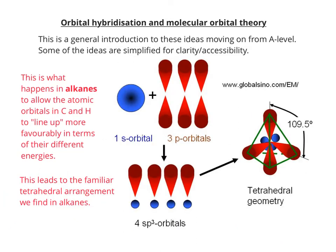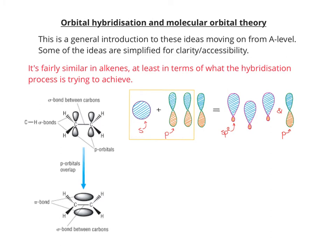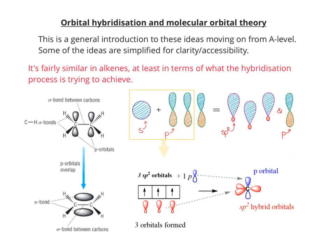SP3 hybridisation also leads to the familiar tetrahedral arrangement we find in alkanes. In alkenes, it's quite a similar process, but what happens is you have the P orbital in each carbon that sticks up and down. Thinking about the way we draw the overlap of orbitals in alkenes from A-level, we get the sideways overlap of the P orbitals. There's also a P orbital that remains unhybridised and overlaps to form the pi bond.